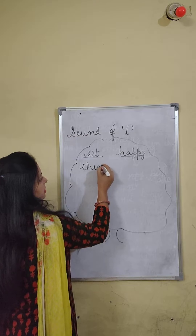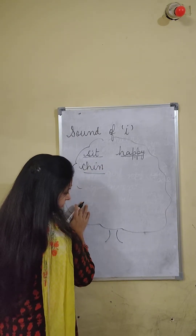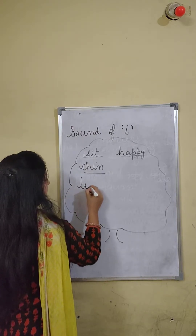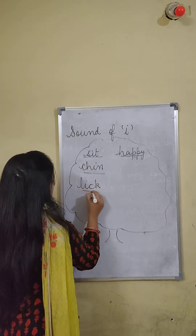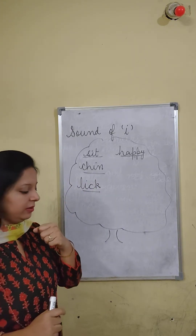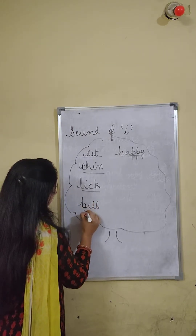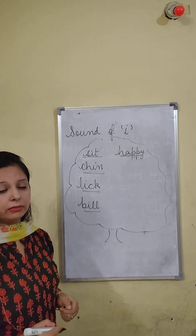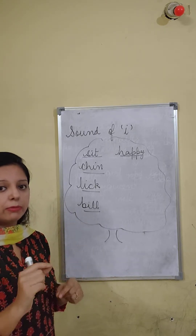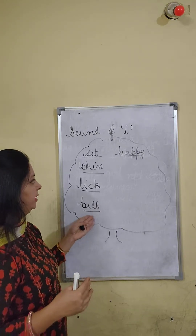So here it will be chin — C-H-I-N. Chin. L-I-C-K, lick. Chin is this. Lick — ice cream ko lick karte hain, chaate hain. Bill — you read bill in the lesson, that kaatne wala. And bill is also the paper you get when shopping, that you pay — that is also bill.